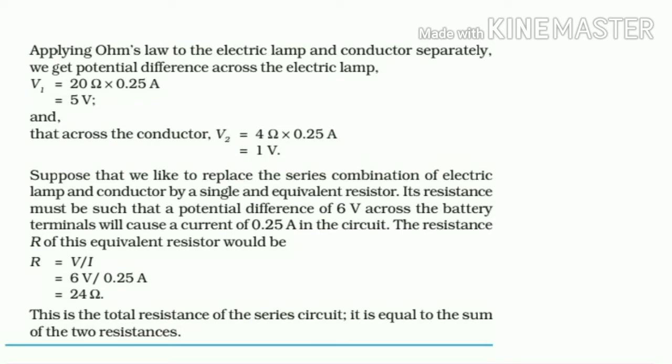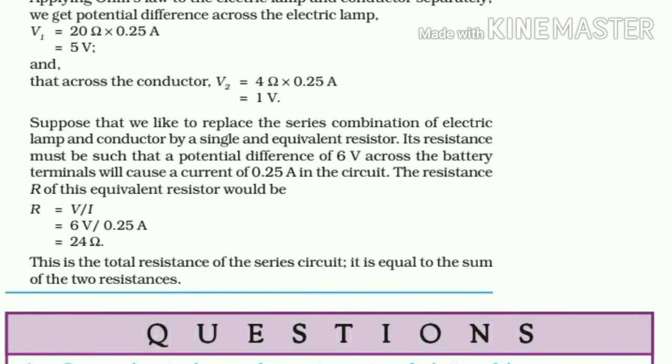4 ohm is the conductor. 20 ohm is the lamp. So 4 multiply 0.25 equals 1 volt. Next, we can find out the resistance.